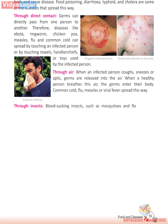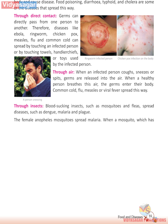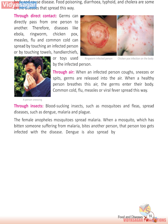Through insects — blood-sucking insects such as mosquitoes and fleas spread diseases such as dengue, malaria, and plague. The female Anopheles mosquito spreads malaria. When a mosquito that has bitten someone suffering from malaria bites another person, that person too gets infected with the disease. Dengue is also spread by mosquitoes. The bite of rats and fleas can also cause plague.